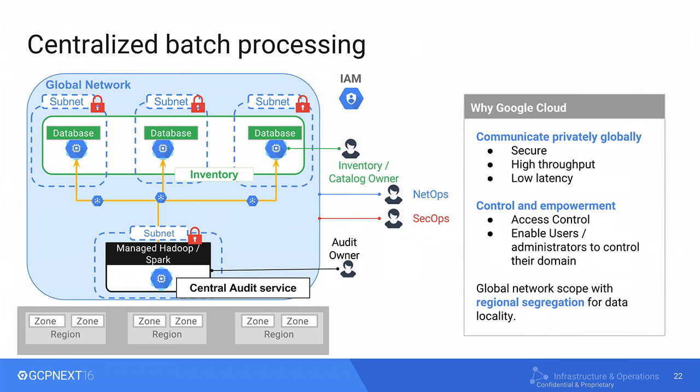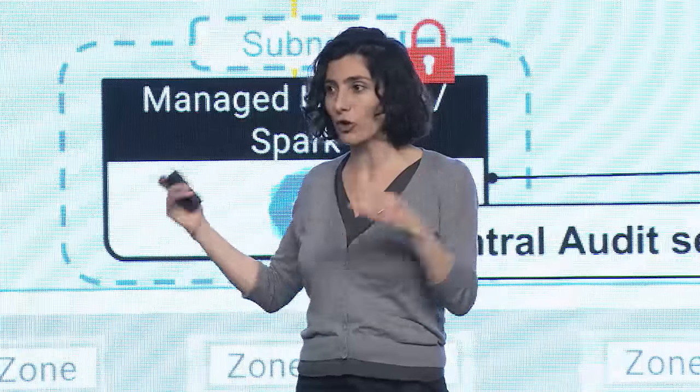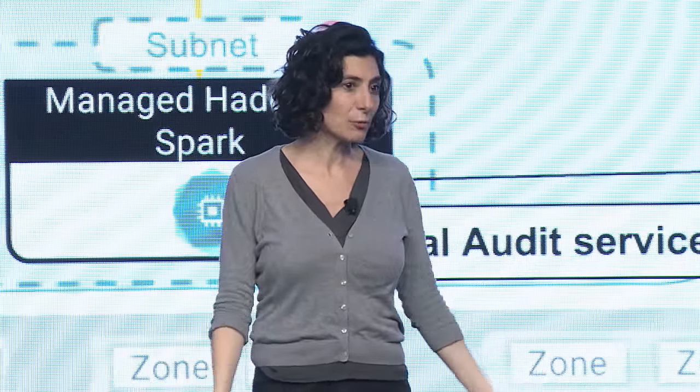Data can be published through a centralized location — you could use Pub/Sub. Private scope communication allows you to do that seamlessly without additional mechanisms to privately connect those regions. The important aspects here are private global communication, the control of users setting up the different services, the segmentation policies applied at the network, sub-network, or VM level granularly — and everything that powers our network with high performance, high throughput, and low latency.